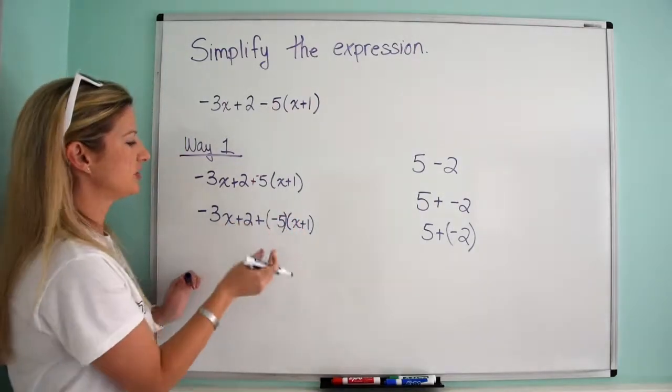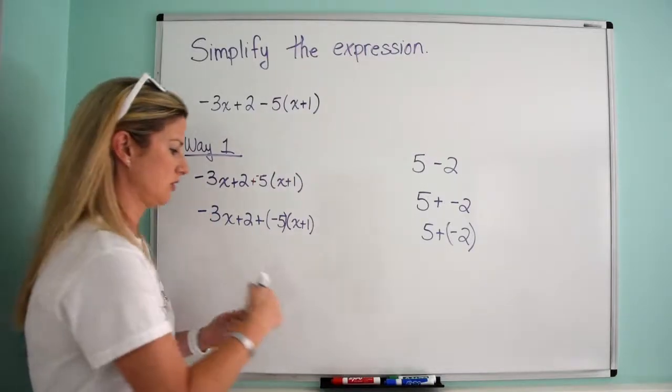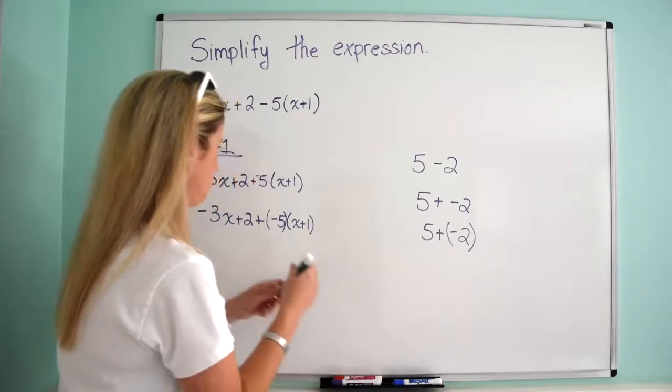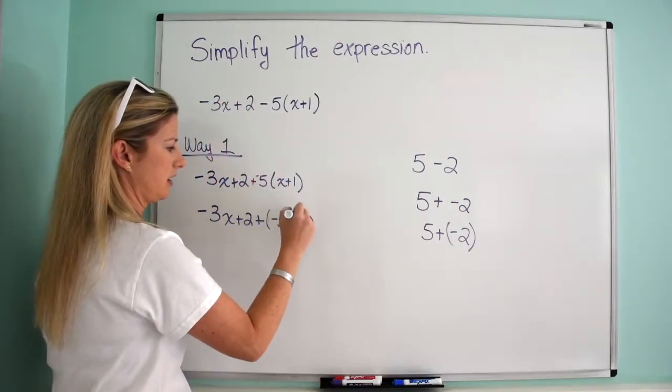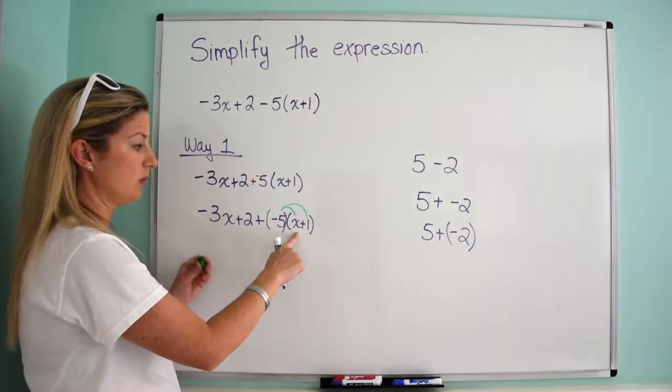All right, so now we're just going to use the distributive property. So we are going to distribute that negative 5 into x plus 1.